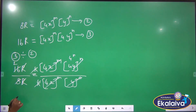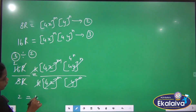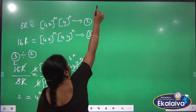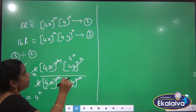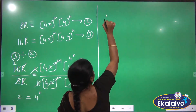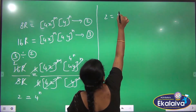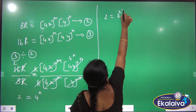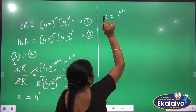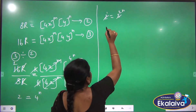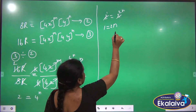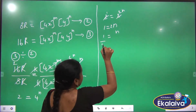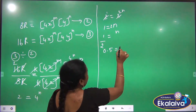Now we have 2 equal to 4 to the power N. We want to bring the bases equal, so we rewrite this as 2 to the power 1 equals 2 squared to the power N, which is 2 to the power 2N. The base cancels, so 1 equals 2N, giving N equal to 1 by 2, which is 0.5.